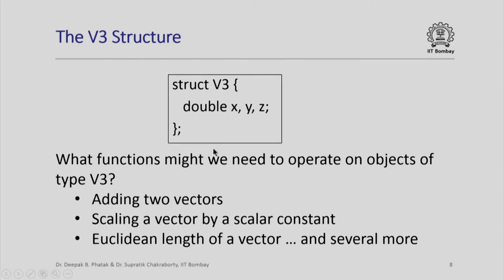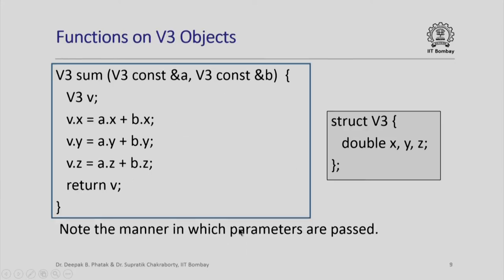Now what functions might we need to operate on objects of type V3? We might need to add two such vectors, we might need to scale a vector by a scalar constant, or we might need to compute the Euclidean length of a vector. There could be several more functions, but for now let us concentrate on these three.